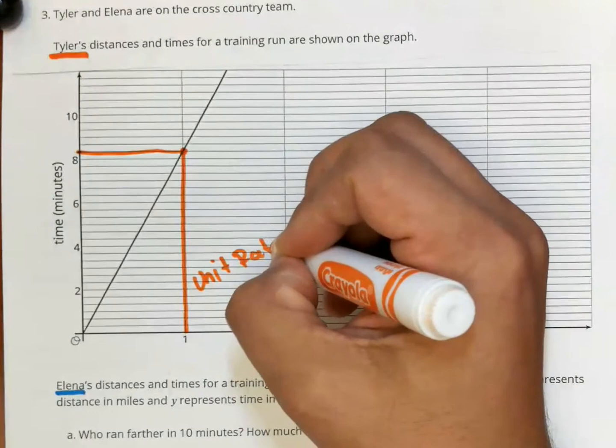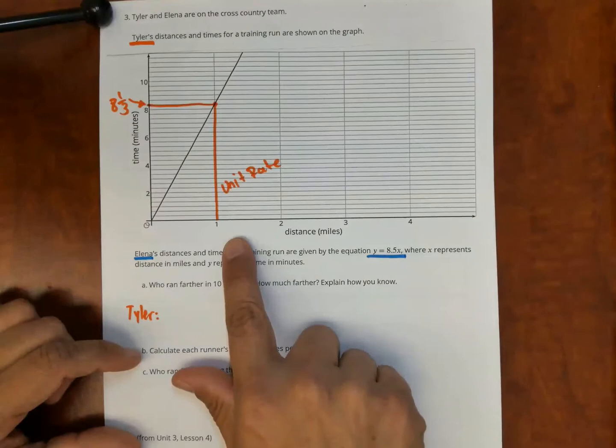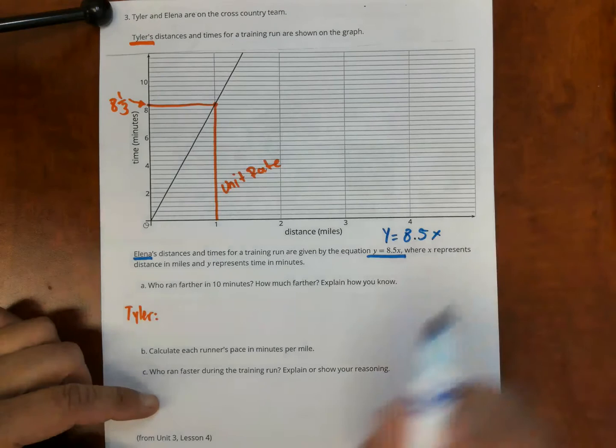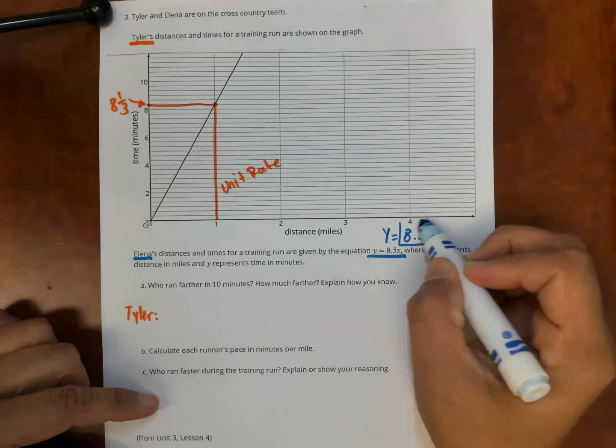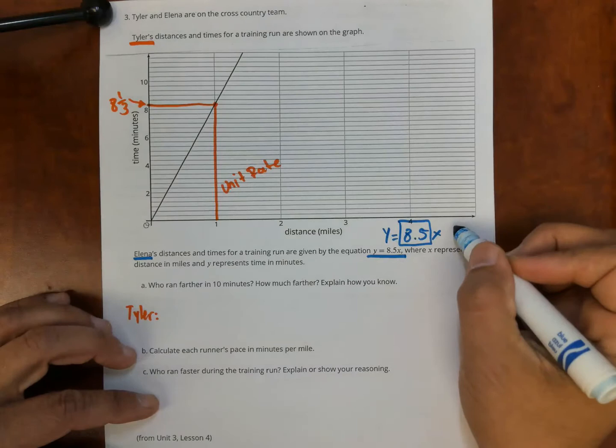So we have eight and one third for one mile. Now for Elena, we have this equation, y equals 8.5x. And when you have an equation that is proportional, the unit rate is the number that's there being multiplied. So this unit rate for Elena is 8.5, eight and a half minutes per mile.